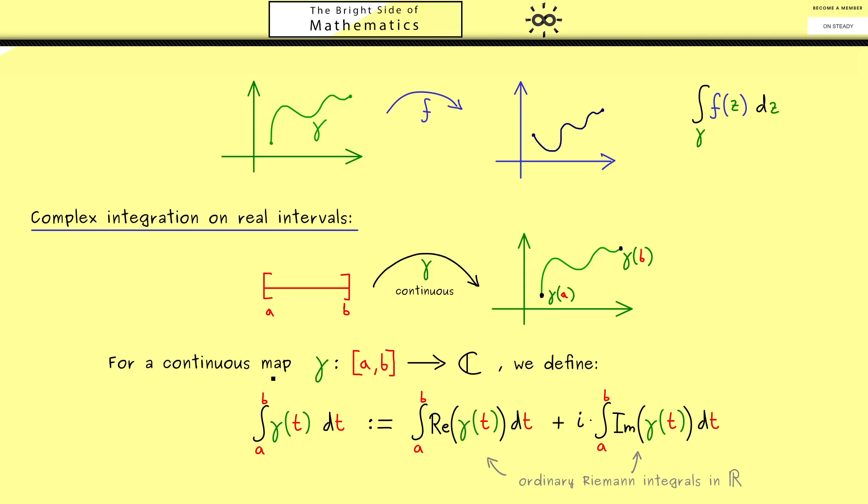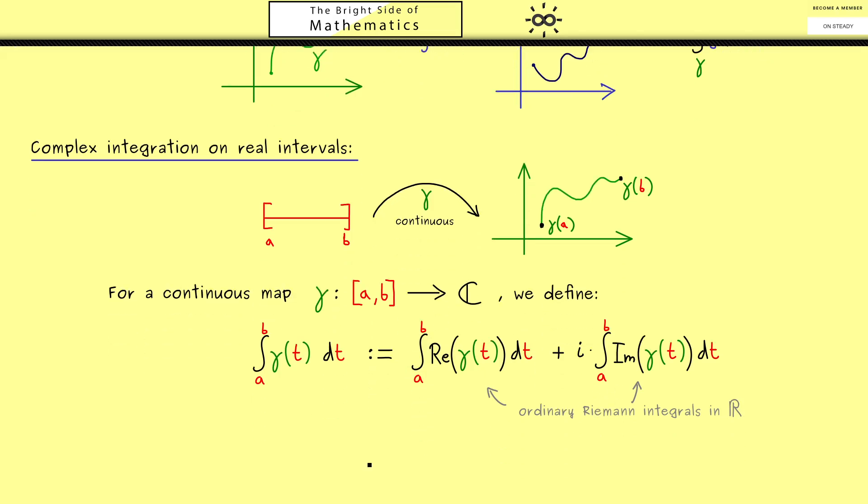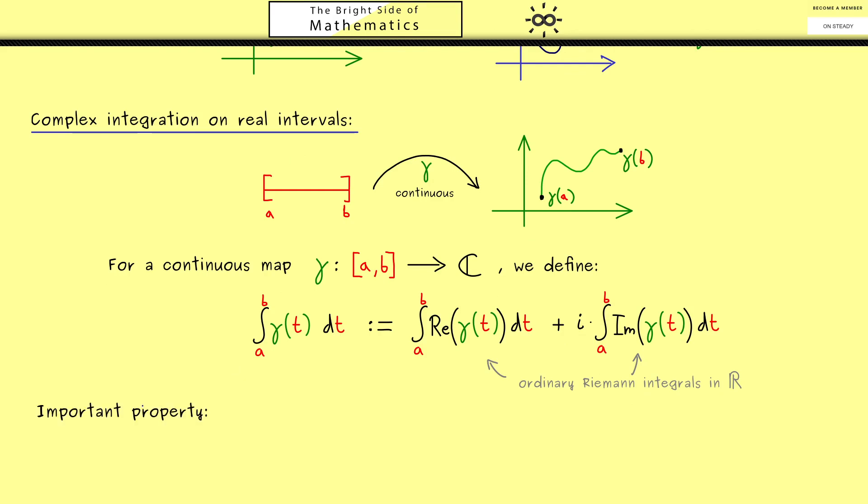Moreover we also find the usual calculation rules for this integral such as linearity, which simply means we can pull out scalars and sums. However on the other hand you might remember that for the Riemann integral in R we have something like monotonicity. Now since the complex numbers don't carry an order like the real numbers we can't have it for this integral.